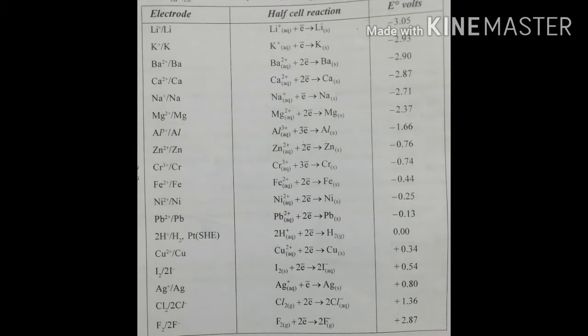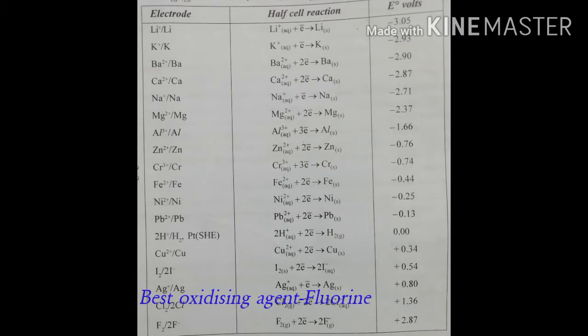The electrode potential value of lithium is minus 3.05. Fluorine's standard electrode potential value is equal to plus 2.87. This is the increasing order of standard electrode potentials in the electrochemical series. Fluorine is the best oxidizing agent.